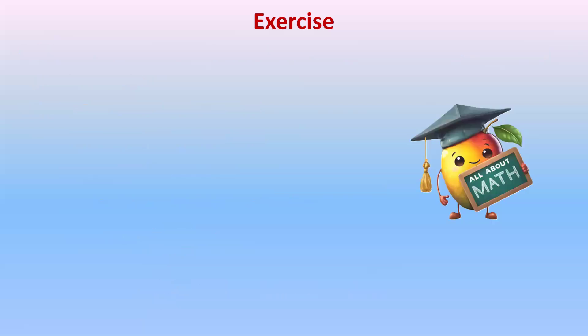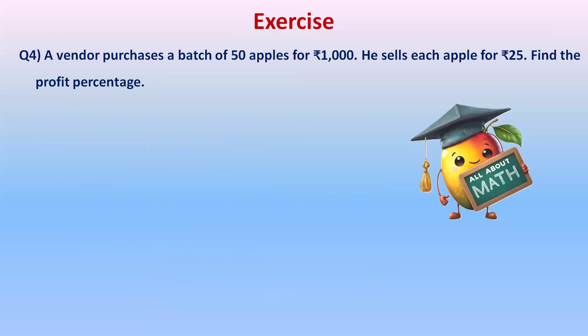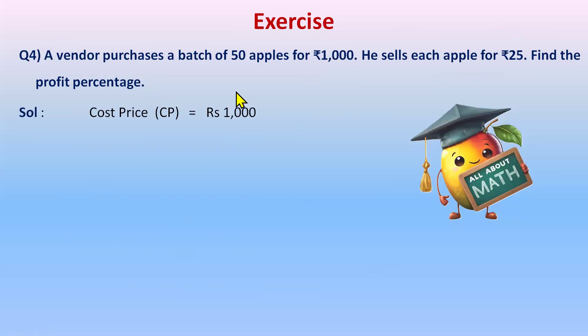Let's do another exercise. A vendor purchases a batch of 50 apples for 1,000 rupees and sells each apple for 25 rupees — find the profit percentage. The cost price of 1,000 rupees is for 50 apples, but the selling price of 25 rupees is for one apple. So we need to find the total selling price for 50 apples, since the cost price is given for 50 apples.